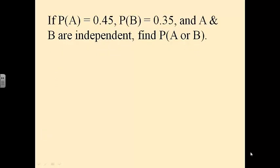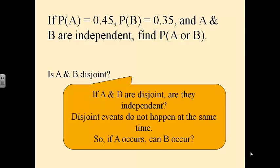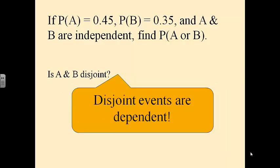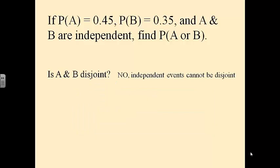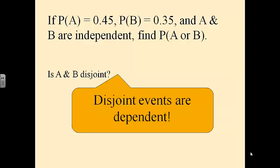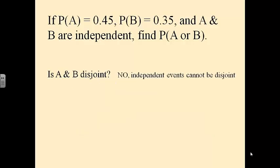Probability of A is 0.45, probability of B is 0.35, and we're told A and B are independent. We're going to find A or B. Are A and B disjoint? If A and B are disjoint, are they independent? Disjoint events do not happen at the same time, so if A occurs, B can't possibly occur. That means the outcome of one affects the other — so disjoint events are always dependent. Since we're told they are independent, independent events cannot be disjoint.